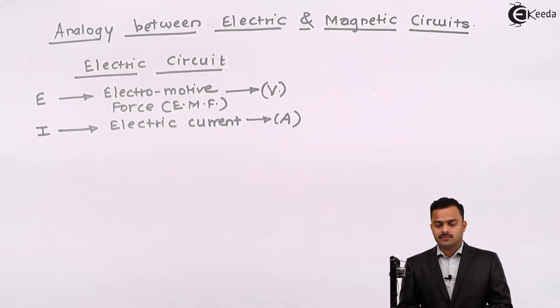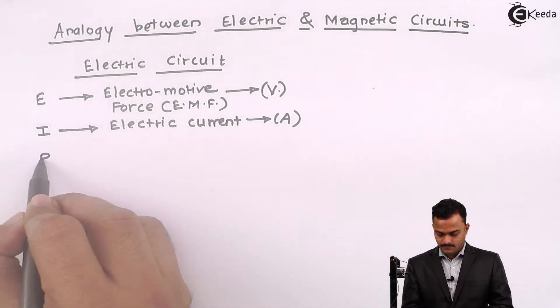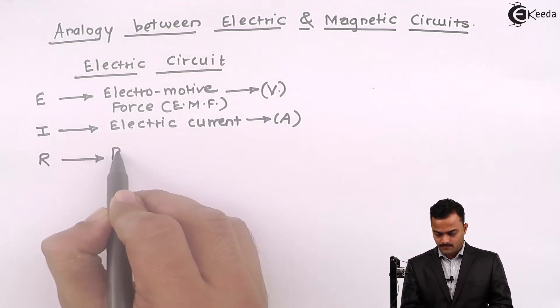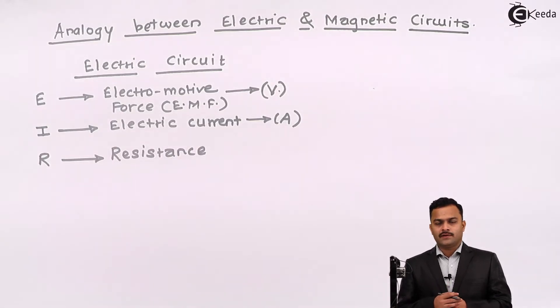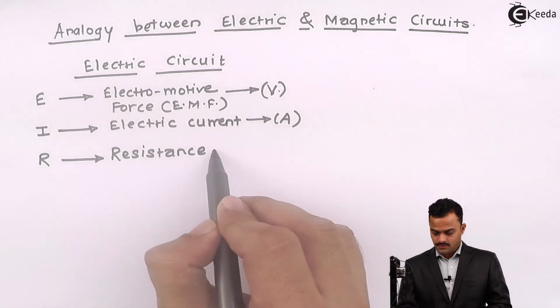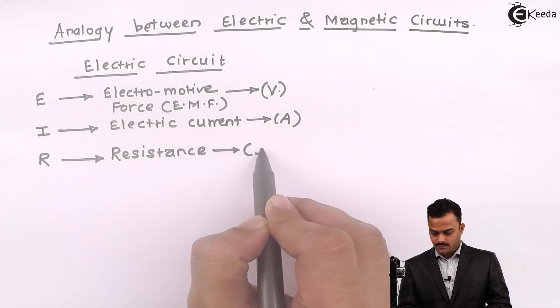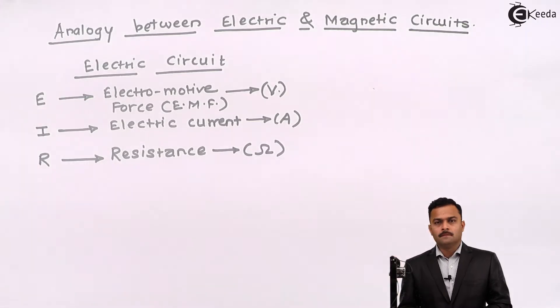Next, we have resistance. Opposition to the flow of current is nothing but a resistance. Unit is Ohm.